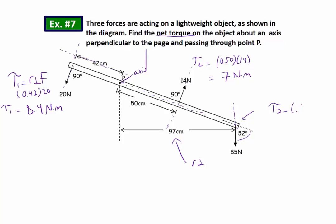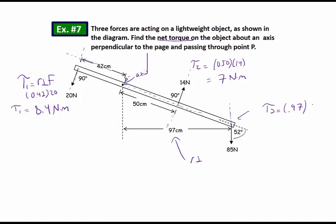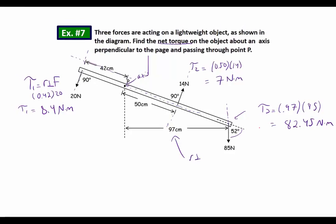So I've got 0.97 meters times the force applied, which is 85 newtons. I don't even need to mess with that angle. Now I'm going to get that my torque is 82.45 newton meters. Okay, so this is torque 3.